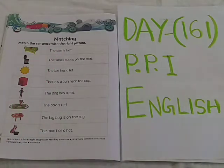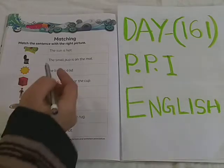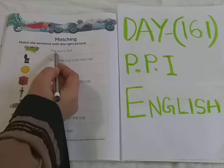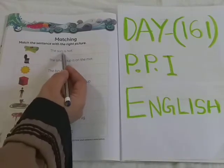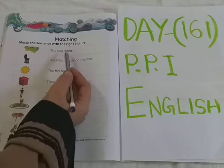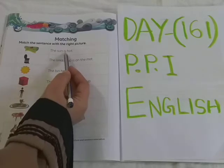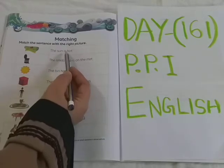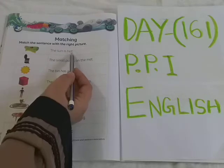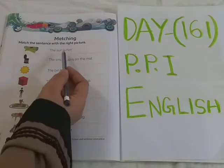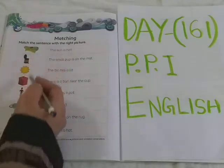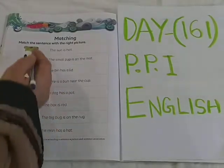Are you ready? Let's do it. See the first sentence, read it. T-H-E — The. S-U-N — Sun. I-S — Is. H-O-T — Hot. What is the sentence children? The sun is hot. So see here in the picture, where is the sun?